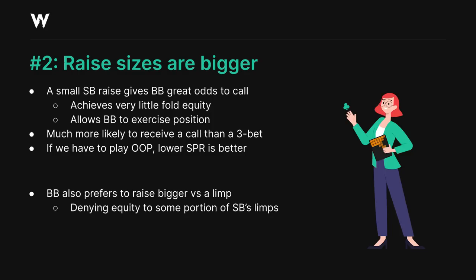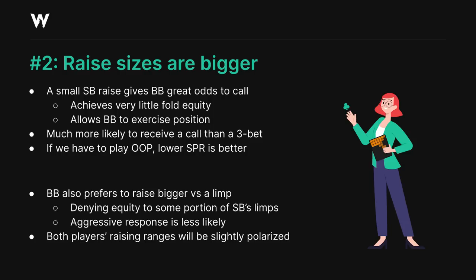On top of this, the small blind's limping range is generally not particularly strong, meaning an aggressive response in the form of a limp re-raise is relatively unlikely. This means the top of our range has a strong desire to start building the pot at a faster rate, to get value from the calls in the small blind's range. Overall, we'll find that both players' raising ranges will usually contain some element of polarization, consistent with using a larger sizing, while the limping or checking ranges will often be somewhat condensed to middle strength or weaker hands, but with some element of protection in there as well.